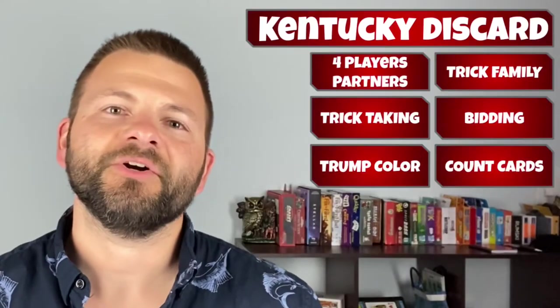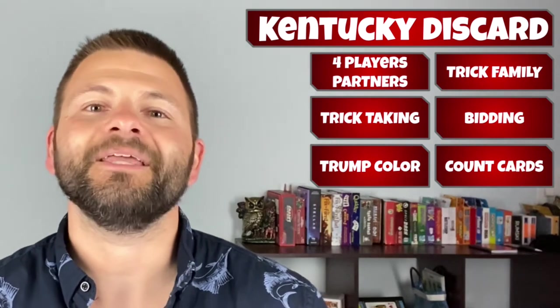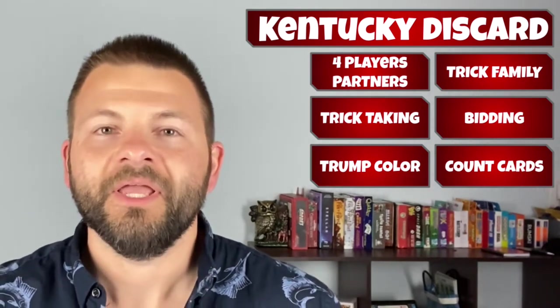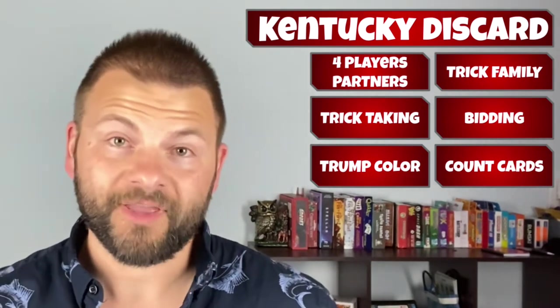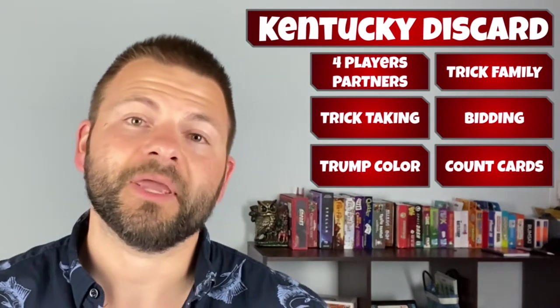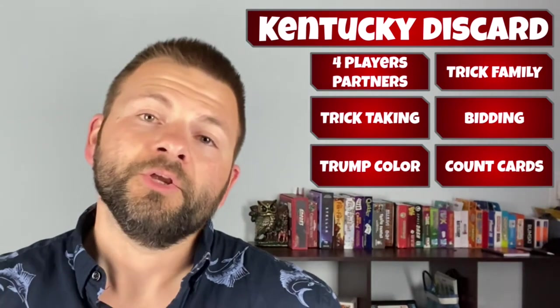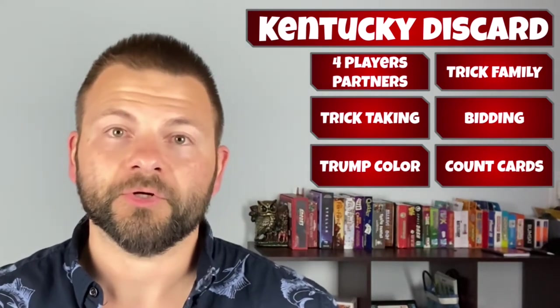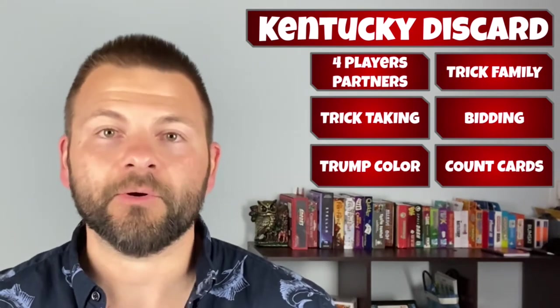Kentucky Discard is a card game for four players played in partnerships. It is in the trick family and its key features and mechanisms include trick taking, a trump color, bidding, and count cards. The round objective for the bid winner is to capture enough count cards to meet or exceed their bid, and they are going to do that as a team.